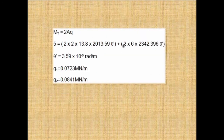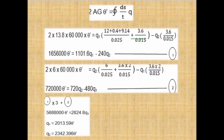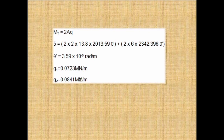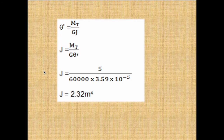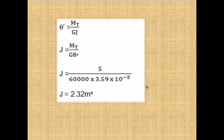The result is theta dash = 3.592 × 10⁻⁵ radians per meter. Substituting this theta dash back gives Q1 and Q2. Finally, to find the torsional constant J, we use theta dash = mt over GJ, so J = mt over (G · theta dash). Substituting mt = 5000, G = 60,000, and theta dash = 3.59 × 10⁻⁵, we get J = 2.32 meters to the power four.